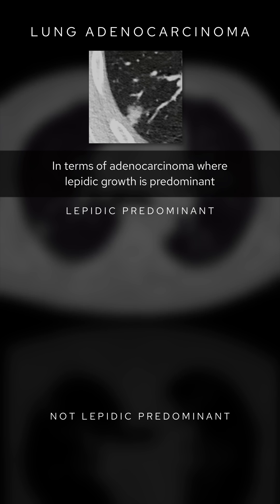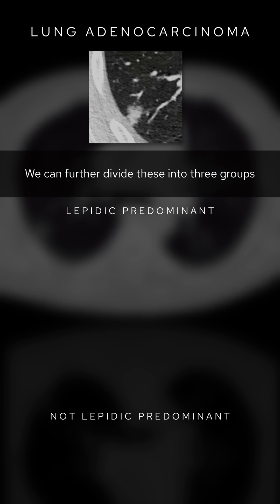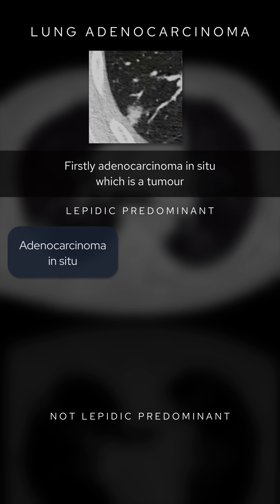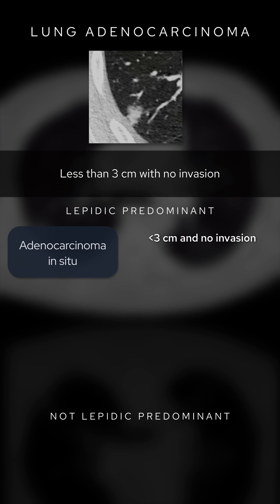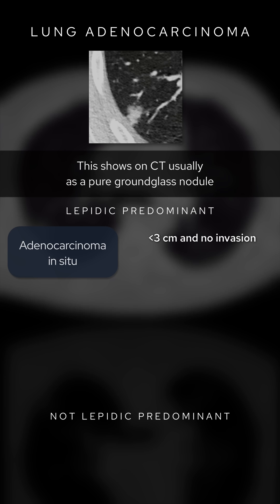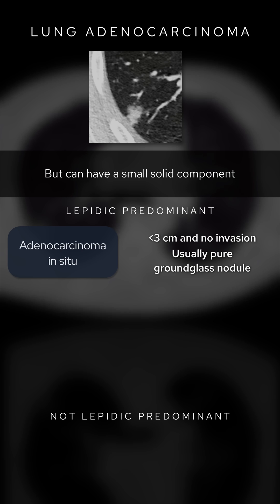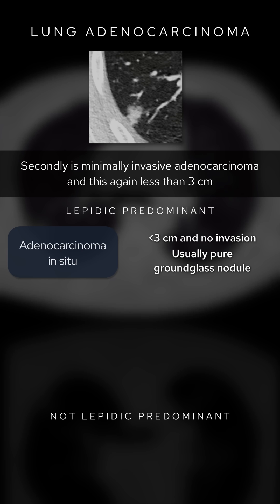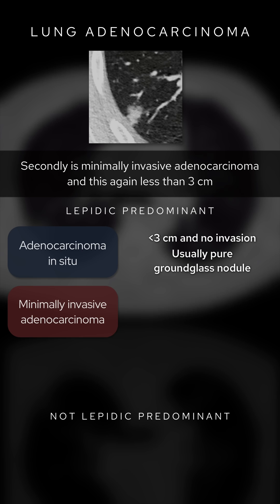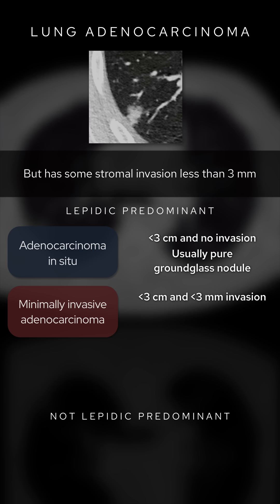In terms of adenocarcinoma where lepidic growth is predominant, we can further divide these into three groups. Firstly, adenocarcinoma in situ, which is a tumor less than three centimeters with no invasion — this shows on CT usually as a pure ground glass nodule but can have a small solid component. Secondly, minimally invasive adenocarcinoma is again less than three centimeters but has some stromal invasion less than three millimeters; on CT there is a small solid component representing the invasive parts.